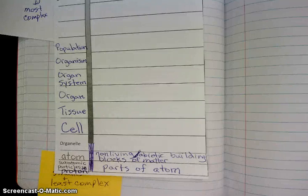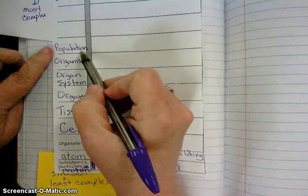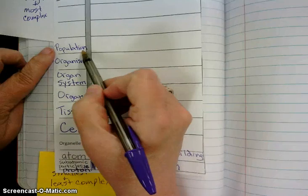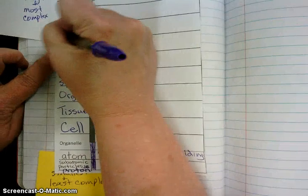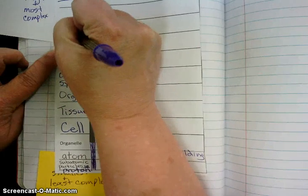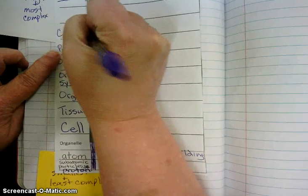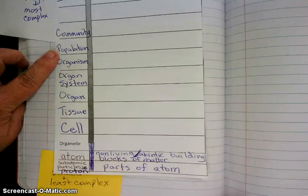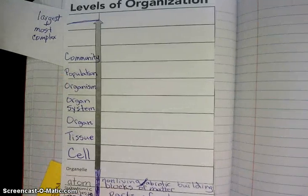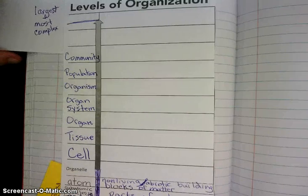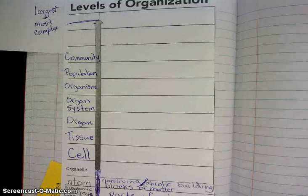Now, if you have more than one population or more than one species living at the same place at the same time, we call that a community. Sometimes you'll hear the word community used in a non-science way, like the community of blue. But here, in science, it's more technically a bunch of different populations living in the same area.